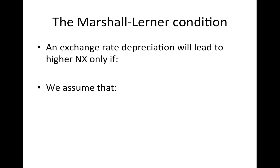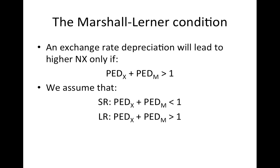What the Marshall-Lerner condition states is the following: we will only improve our net exports if the sum of the PED of exports and imports is greater than 1. As we've seen, we assume that in the short run that is not the case, and that this condition is only satisfied in the long run. We will see later why we assume this.